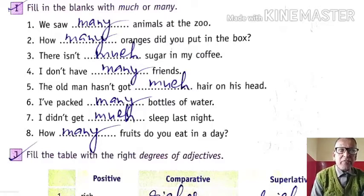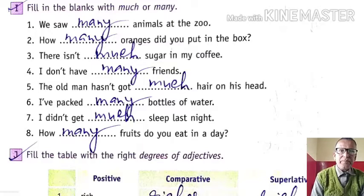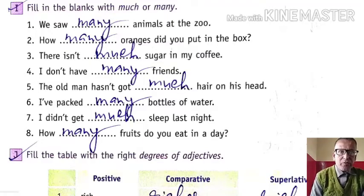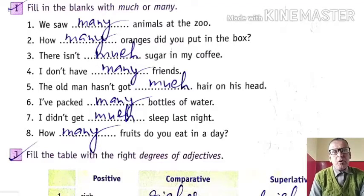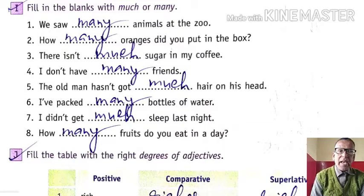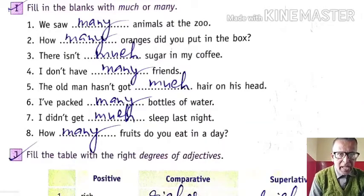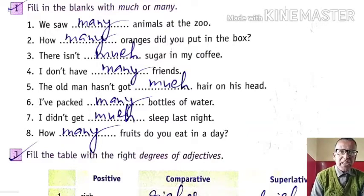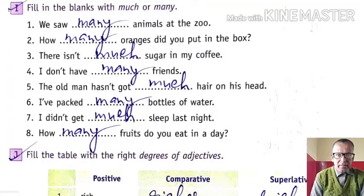Fill in the blanks with 'much' or 'many'. Many is used with countable nouns — things which can be counted. Much is used with things which cannot be counted. So on the basis of countable or uncountable, let us do that.